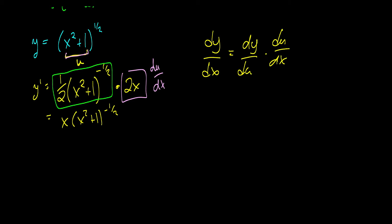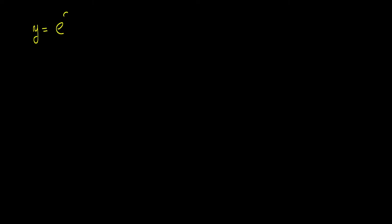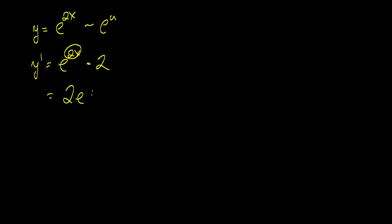So this wasn't necessarily too difficult. Let's do one more simple example: e to the 2x. We take the derivative of e to the 2x, which is the same as e to the u, so we get e to the u — meaning e to the 2x. Then we multiply by the derivative of the inner function, which is 2. So we get 2 times e to the 2x.